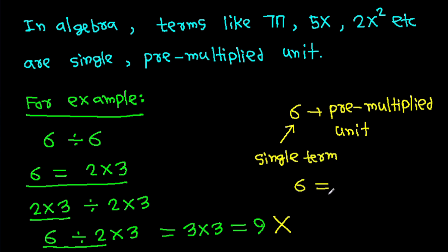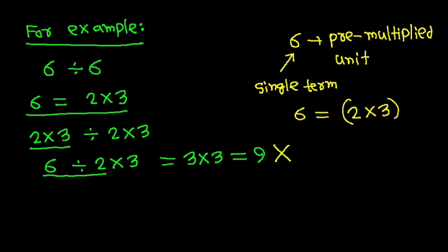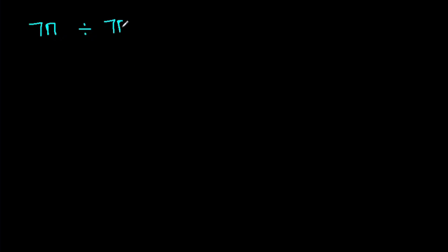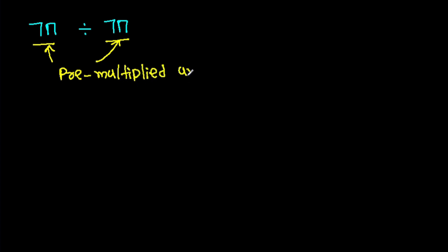So 6 must be written as (2 times 3) in brackets, to show it is a single number. Similarly, 7π divided by 7π — 7π is a pre-multiplied unit, a single term. So 7π divided by 7π is simply 1.